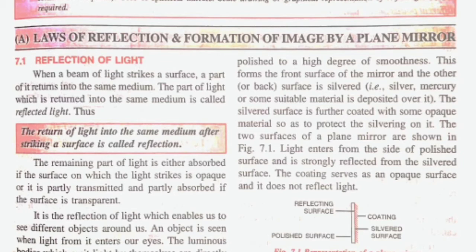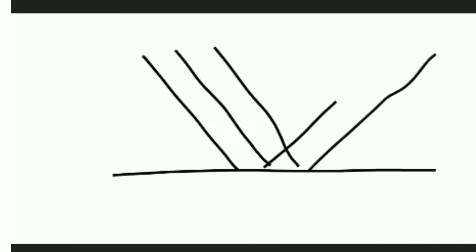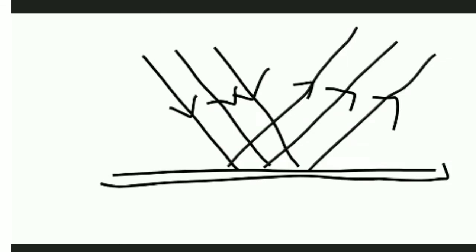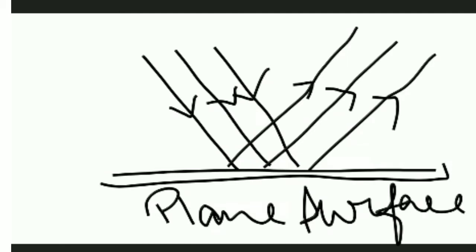There are two kinds of reflection: regular reflection and irregular reflection. It will come from the words regular and irregular, and hopefully you studied this in lower grades. If we talk about regular reflection, it occurs on a plain mirror or a smooth surface. When light comes, it reflects in a parallel direction. That is called regular reflection. The key word is smooth surface, and the ray of light reflects in a parallel direction.